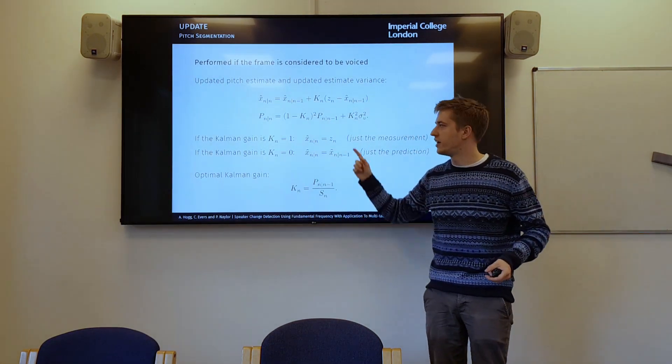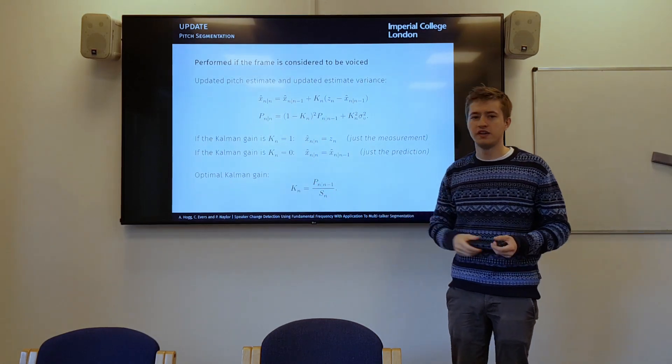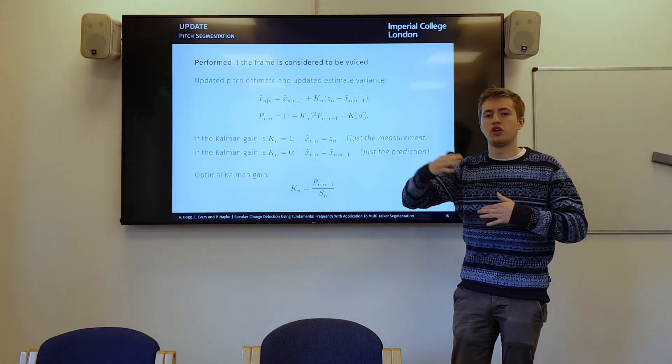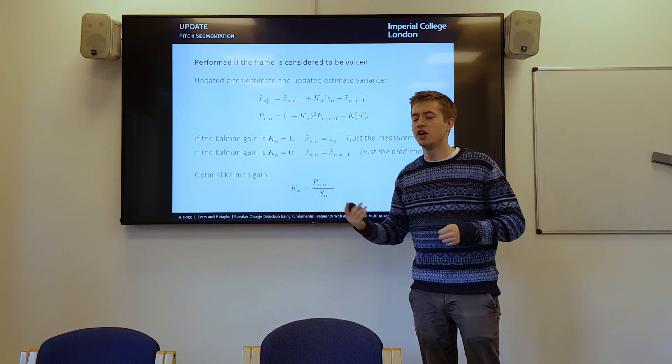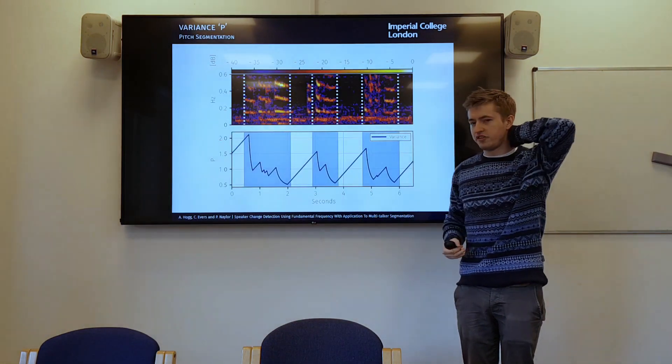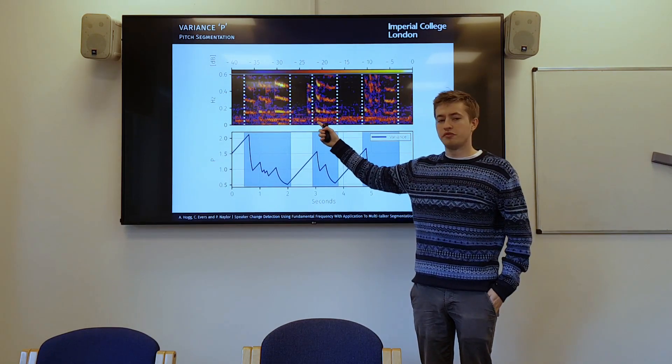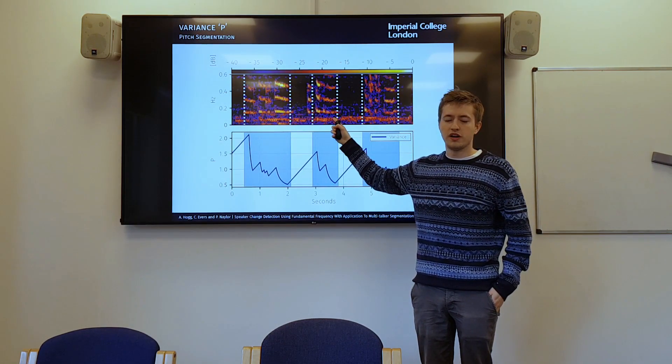And obviously this Kalman gain relies on this variance, which you can see here. So if the variance is very large, then k is closer to one, meaning that the model is less accurate.